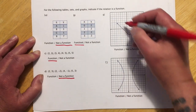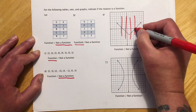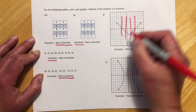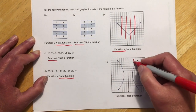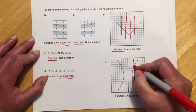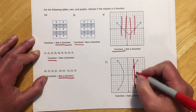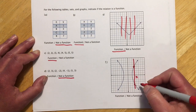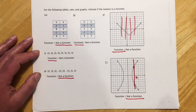For graphs we do the vertical line test. If I can't hit the graph more than one time anywhere I draw a vertical line, that is a function. But you can see with this one, when I draw a vertical line it intersects twice, which means for that x there are two different y's associated, so that would make it not a function.